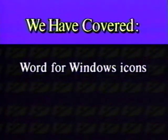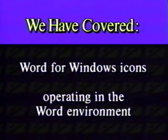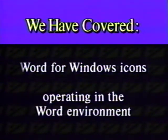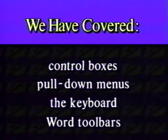Here is what we learned in this chapter. We discussed the Word program group icons. We learned how to operate in the Word environment. We used control boxes, pull-down menus, and the keyboard. We also learned about Word toolbars.